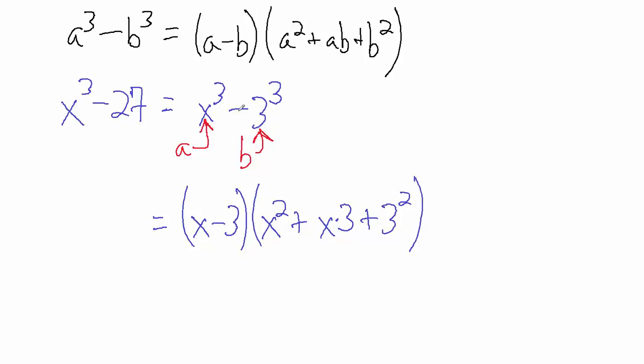Now notice, even though we have a minus sign in front of the 3, B is still just positive 3, not negative 3, because the formula says A cubed minus B cubed. So here's our A - it's being cubed - then we subtract the B cubed.